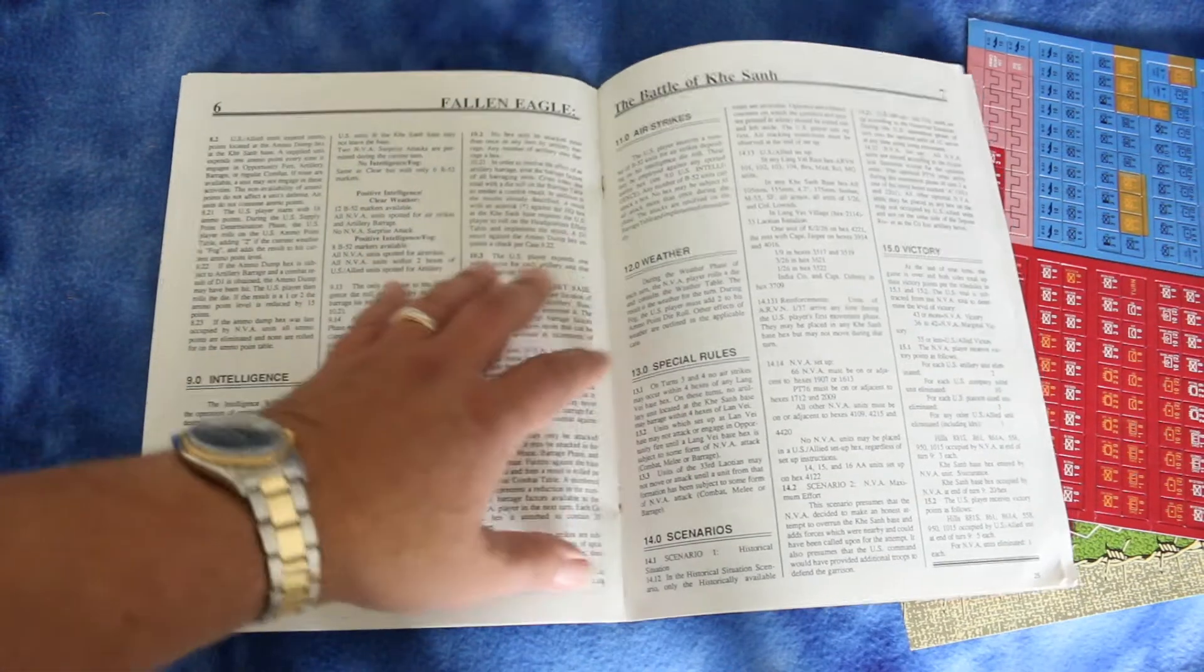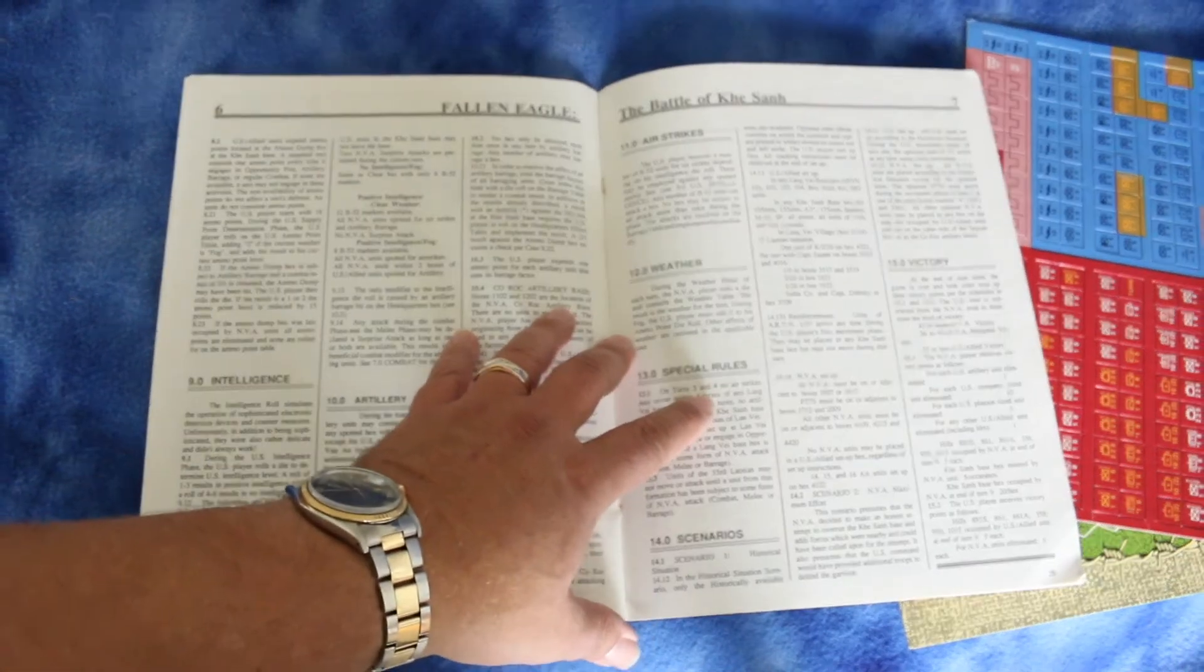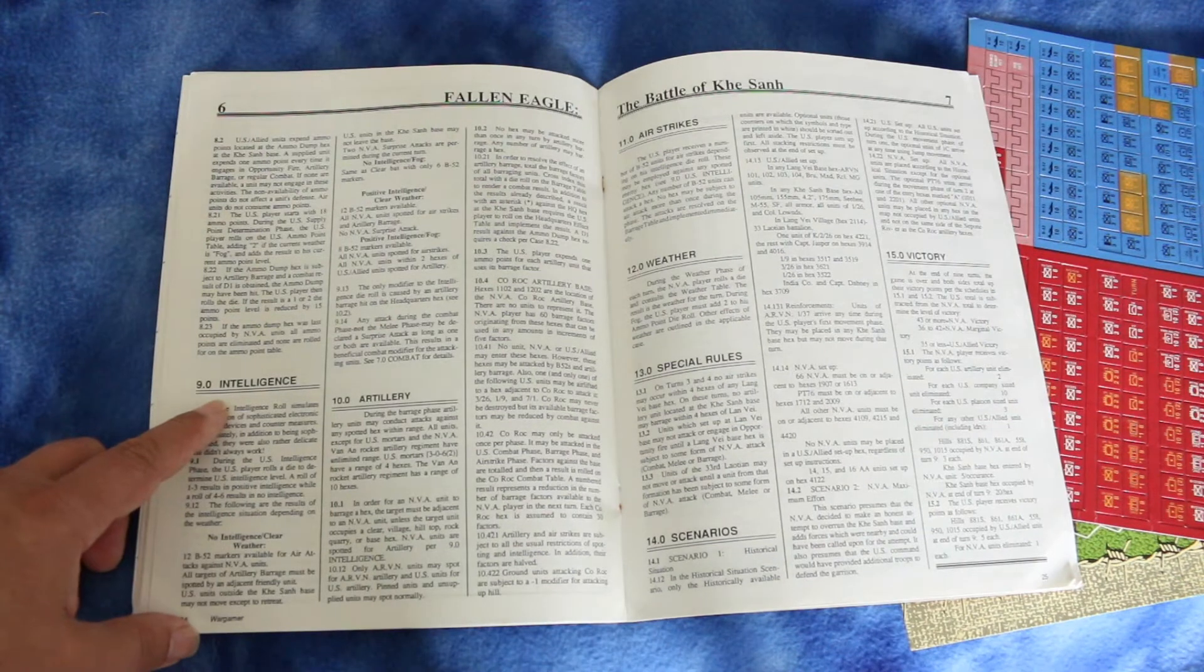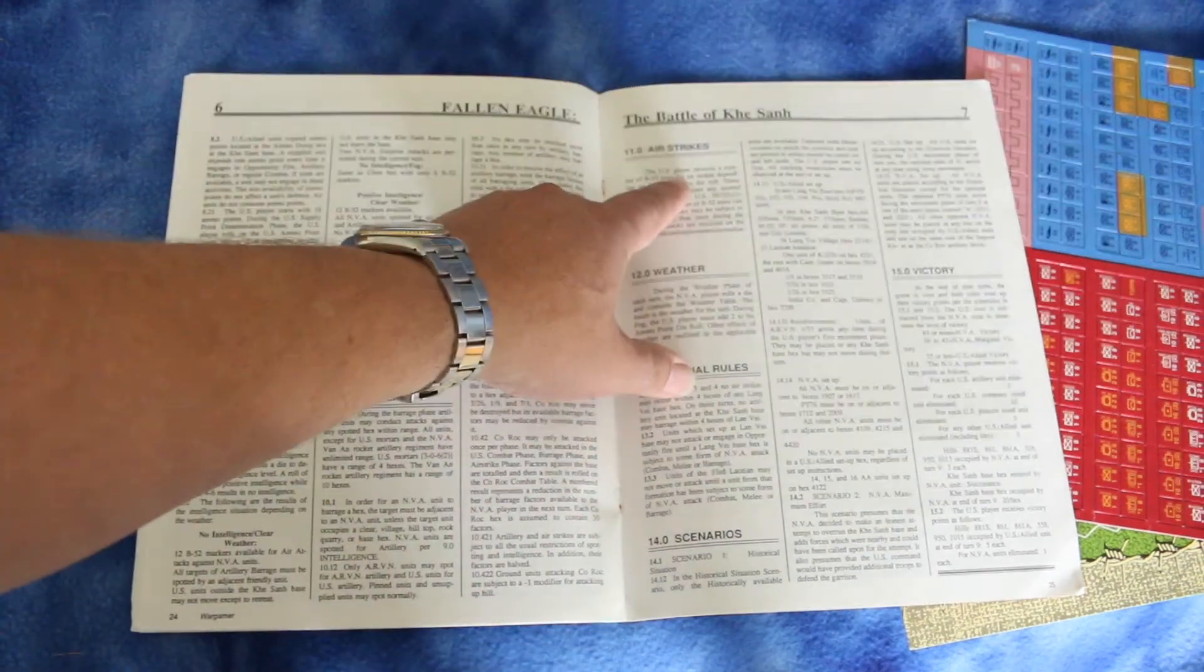All right, again intelligence rules, artillery of course, airstrikes. All right, you got B-52 airstrikes it says, and you got weather rules, special rules.